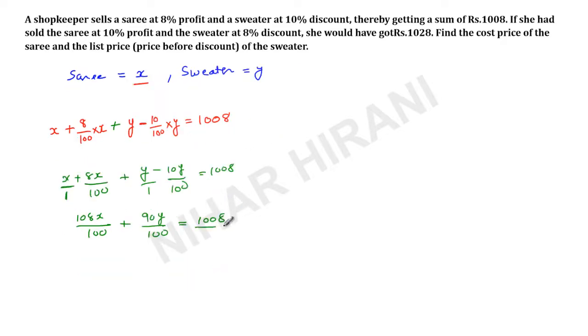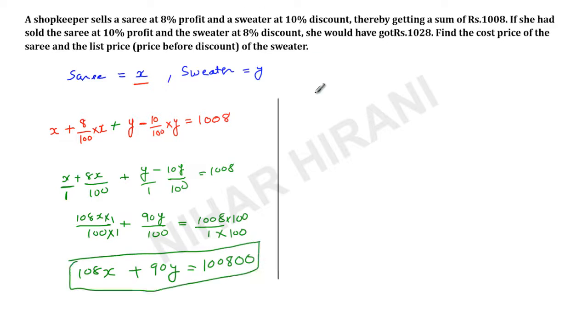Here I have 1. So now I will take LCM of the whole equation because I don't want denominators. So I will take LCM, and that will be 100. So 100 times what gives you 100? 1. So this will be multiplied by 1, 108X plus 90Y. Here, 1 times what gives you 100? So numerator and denominator to be multiplied by 100, so this will be 100800. This is my equation number 1.